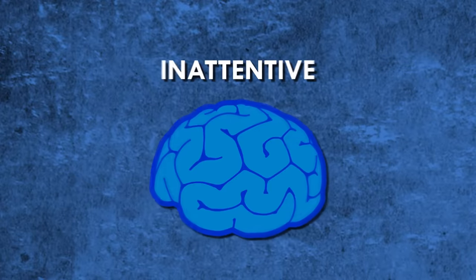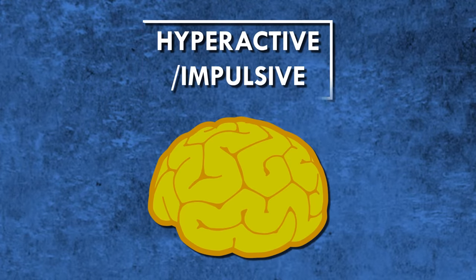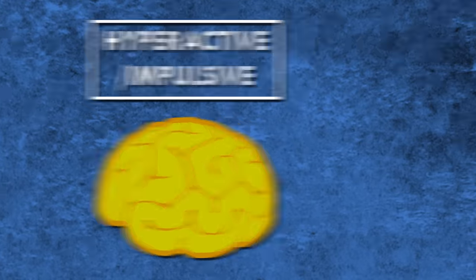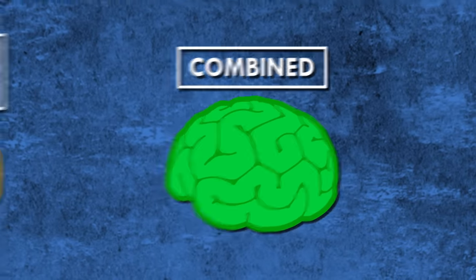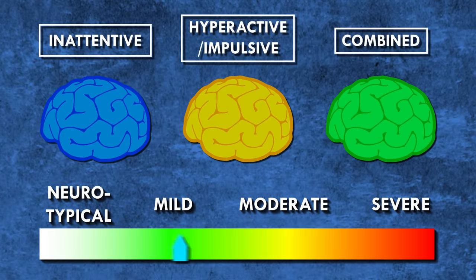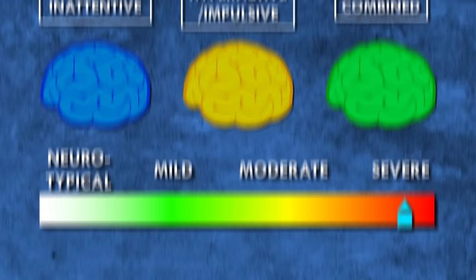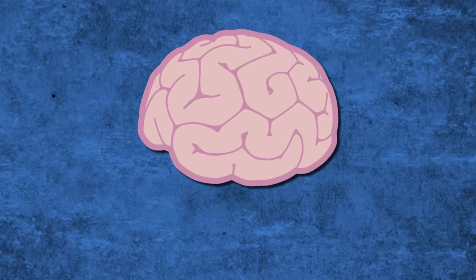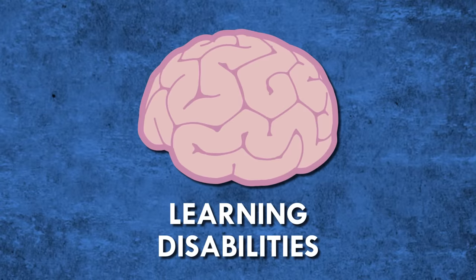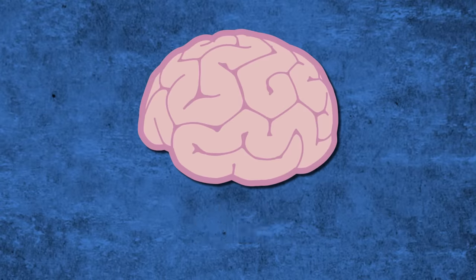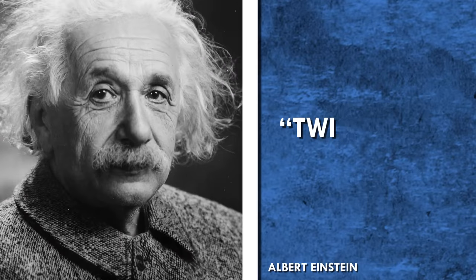Not everyone with ADHD has the same symptoms. In fact, ADHD diagnoses are separated into three presentations: primarily inattentive, primarily hyperactive or impulsive, and combined type. There are different levels of severity, and people with ADHD often have coexisting conditions, such as learning disabilities, anxiety, or depression. They can also be gifted. The term for this is twice exceptional.